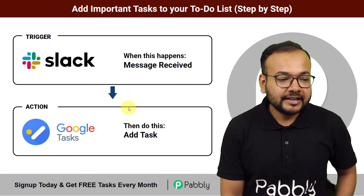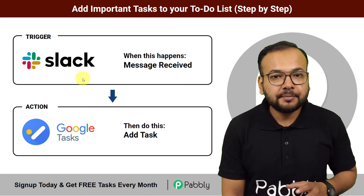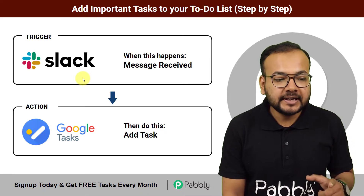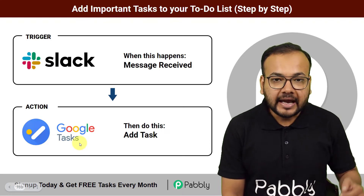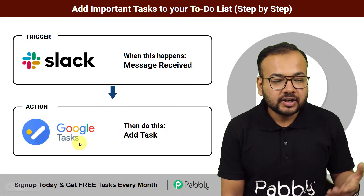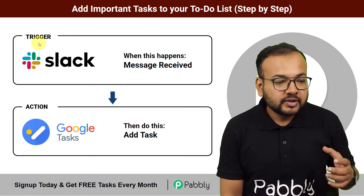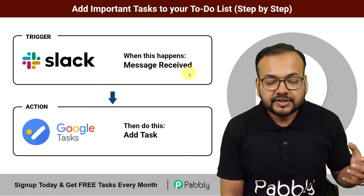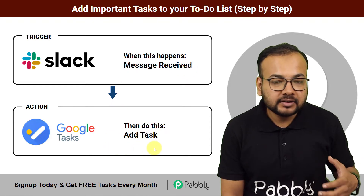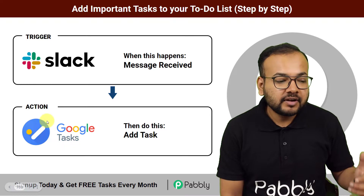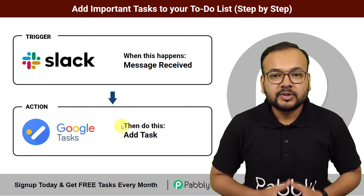In this tutorial you will learn an integration between Slack, which is a messaging application for internal communications of businesses and companies, and Google Tasks, which is a task managing and to-do list building application. We are using Slack as a trigger so that as and when you receive any message, a task will be created in Google Tasks, which is our action application. Let me show you how you can do this.